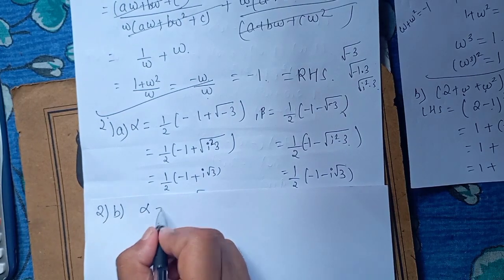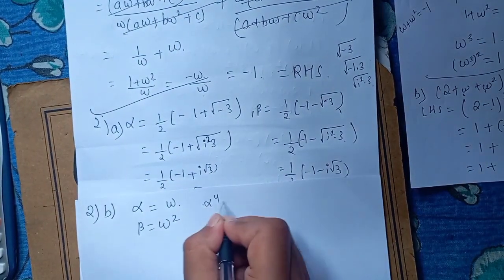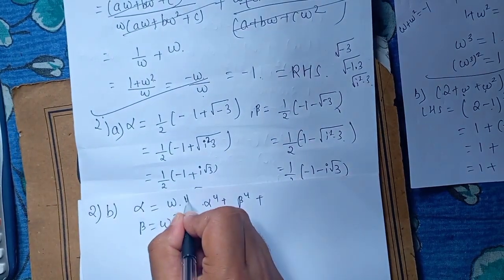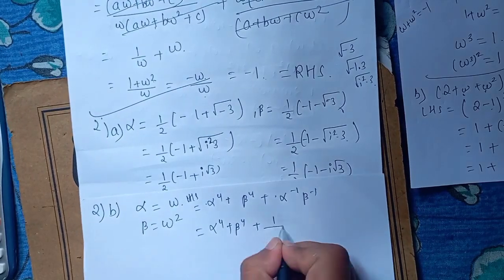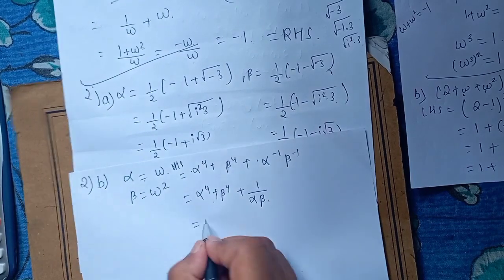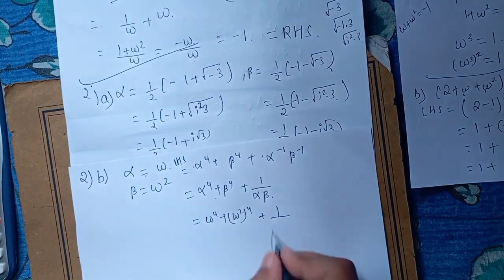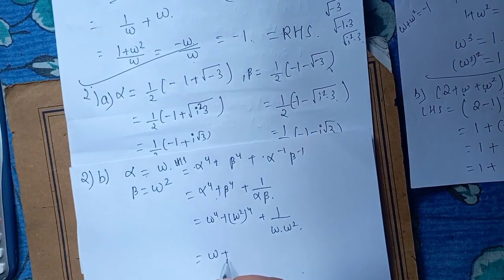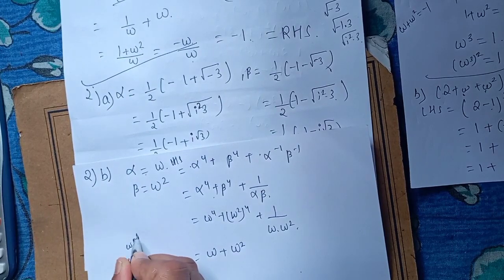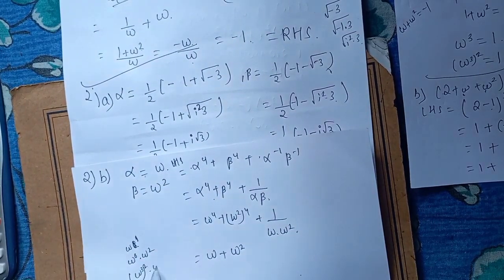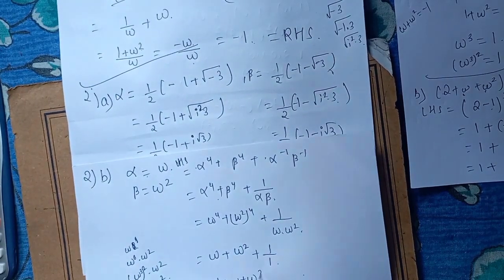Alpha n beta are complex cube roots, equal. They are equal to omega r, and beta is equal to omega squared. Alpha to the power 4 plus beta bar 4 plus LHS. Alpha minus omega squared is omega squared, plus 1 beta minus omega squared. Omega to the power 4, plus delta minus omega squared. If omega is 8y, omega to the power 6 into omega squared, omega cubed equals omega squared plus 1 into omega squared. Sin 1: 1 plus omega plus omega square is equal to 0.